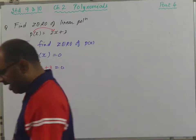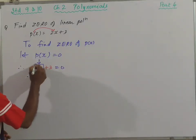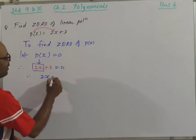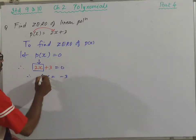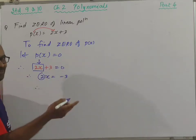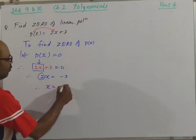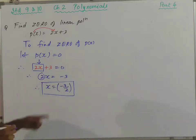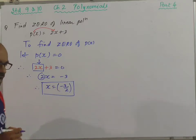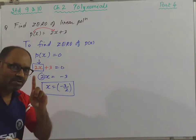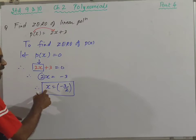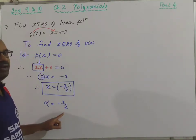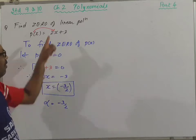You have been solving this since 7th standard. The term containing x is the first term; the second term is 3. It is added, so on the other side it will subtract: 2x = 0 - 3 = -3. Now to get rid of 2, since it multiplies x, on the other side it will divide. So x = -3/2. That is the zero of this polynomial. Every linear polynomial has one and only one zero, called alpha. Alpha = -3/2.